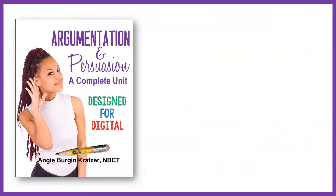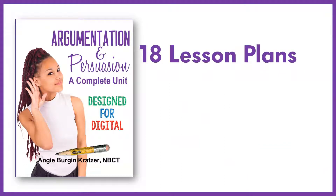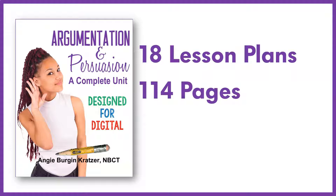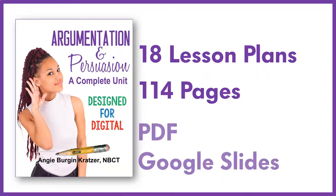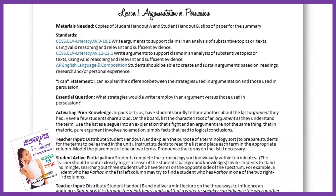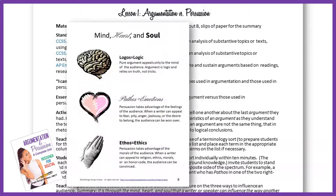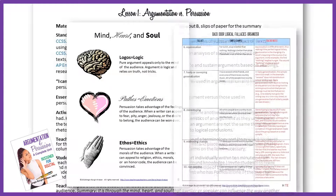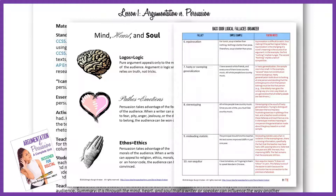Argumentation and Persuasion is a complete unit of 18 lesson plans. There are 114 pages and the resource is provided in two formats: PDF and Google Slides. The lesson plans are detailed and include materials needed, standards, activation of prior knowledge, essential question, I can statement, teacher input, active student participation, and a summarizer. Handouts are visually appealing and all exercises and assessments come with keys and notes for the teacher.